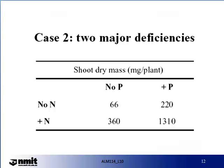A second example is shown in the major deficiency of phosphorus and nitrogen. Here we can again see that shoot dry mass will alter depending on what is available to the plant. The ultimate shoot dry mass production in this case study is achieved with optimal phosphorus and optimal nitrogen.